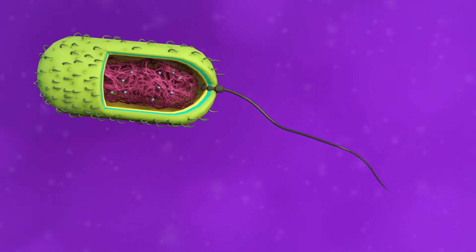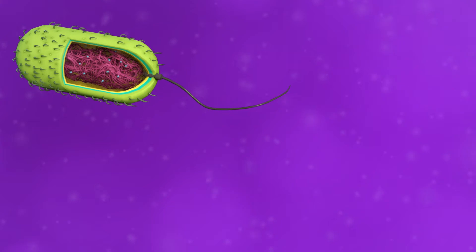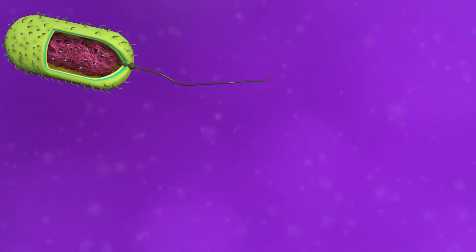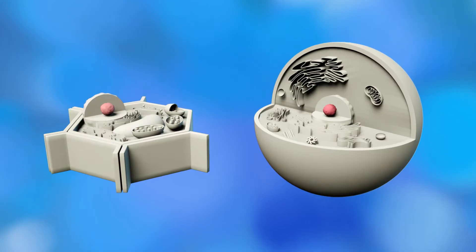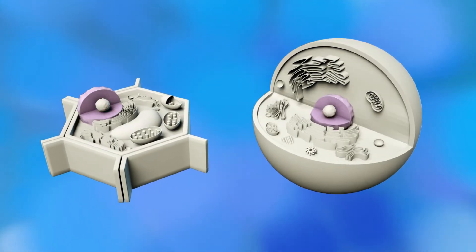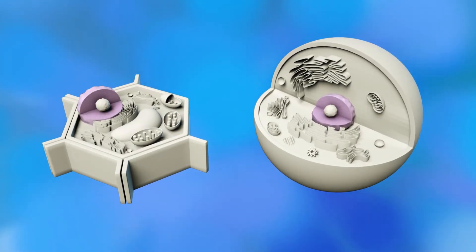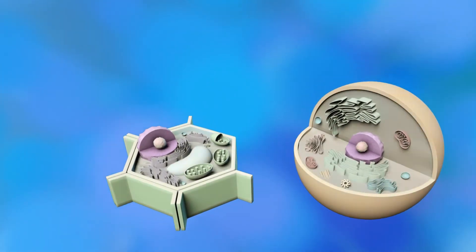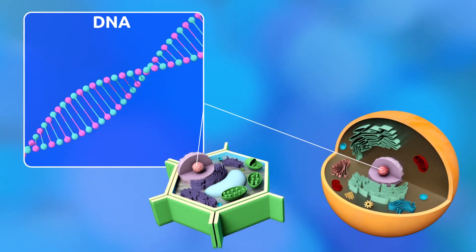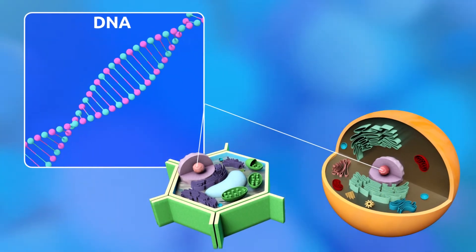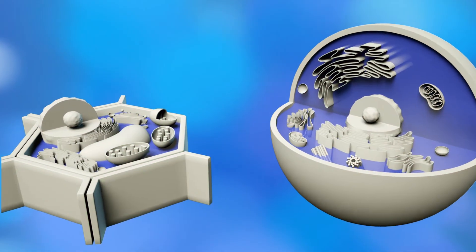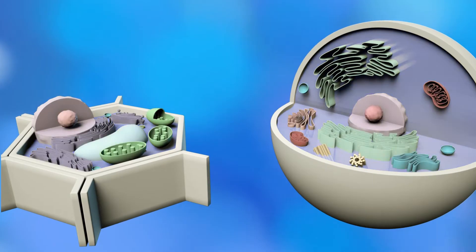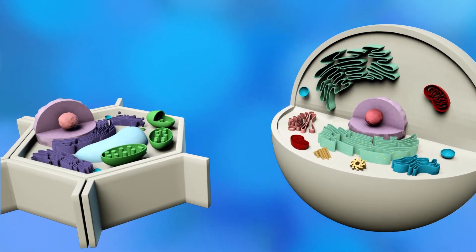Sperm cells, for example, move via flagella. The main characteristic of eukaryotic cells is that their nucleus is protected by a membrane. DNA is found inside eukaryotic cells, which contain genetic material.